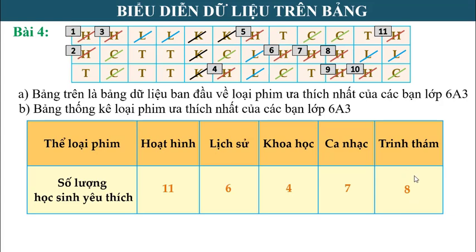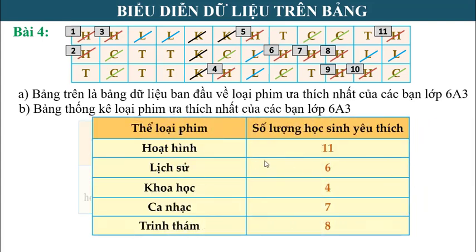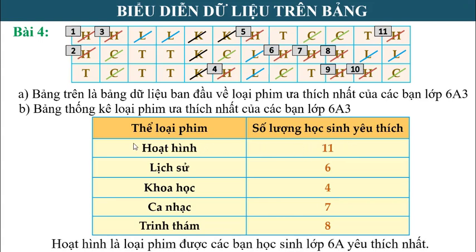Cô đã hướng dẫn các bạn lập bảng thống kê dữ liệu theo hàng. Ngoài cách lập theo hàng, các bạn có thể lập bảng thống kê dữ kiện theo cột. Nhìn vào bảng, số lượng học sinh yêu thích phim hoạt hình là 11 bạn, chiếm số lượng lớn nhất. Nên hoạt hình là thể loại phim được các bạn yêu thích nhất.